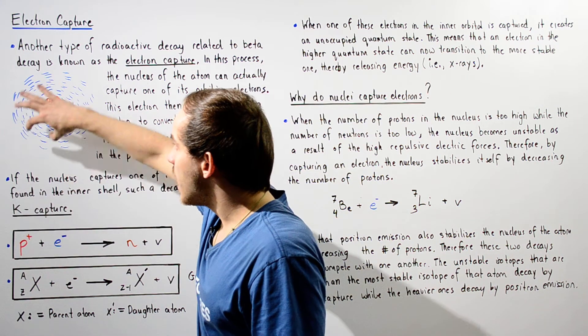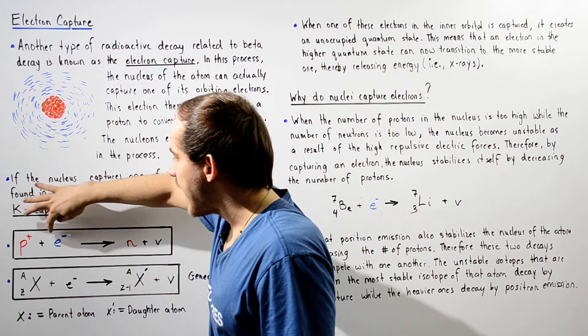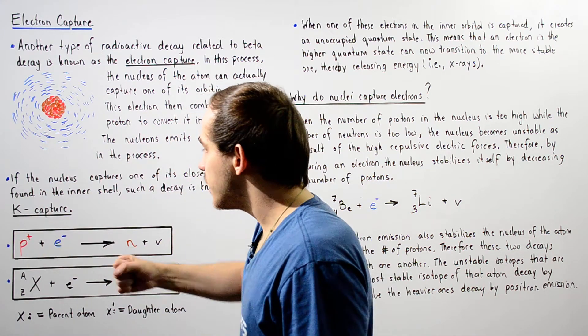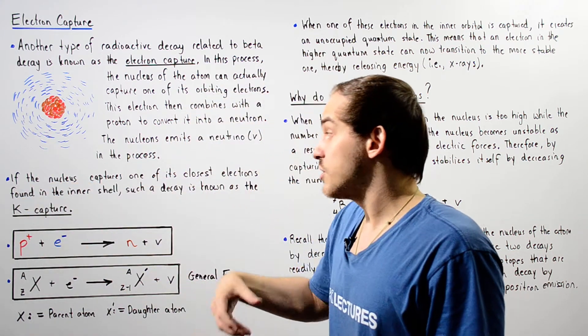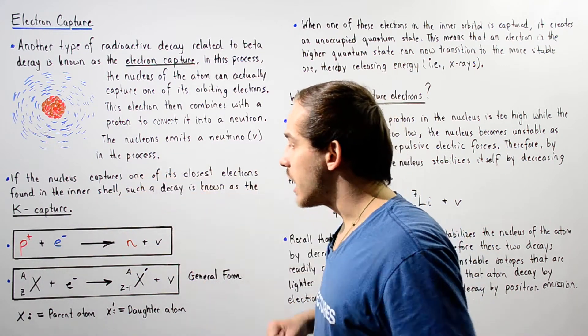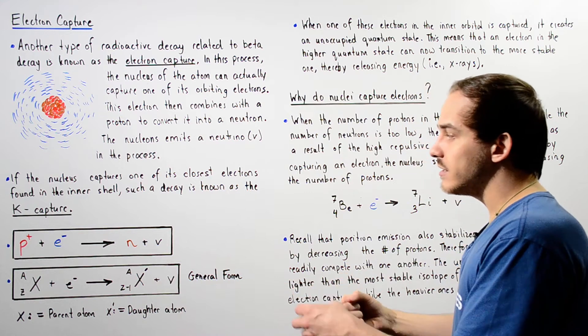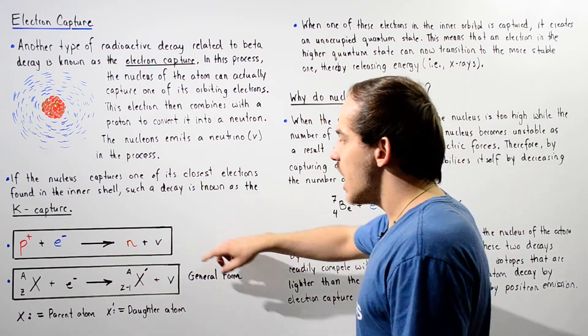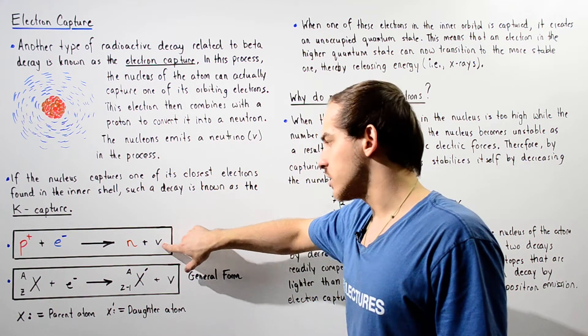So the proton in the nucleus basically captures our electron and combines with it. These two disappear or they become our neutron.